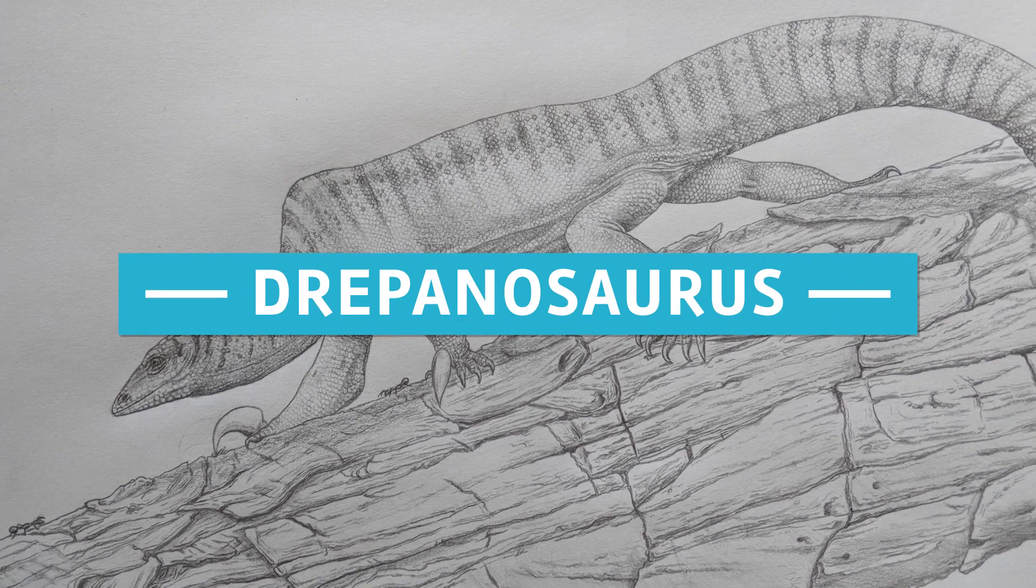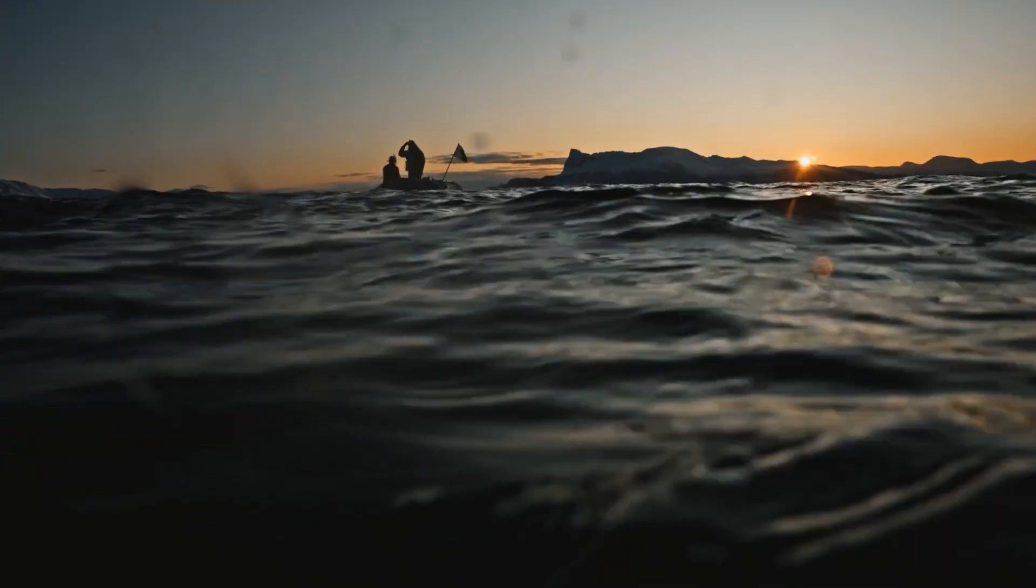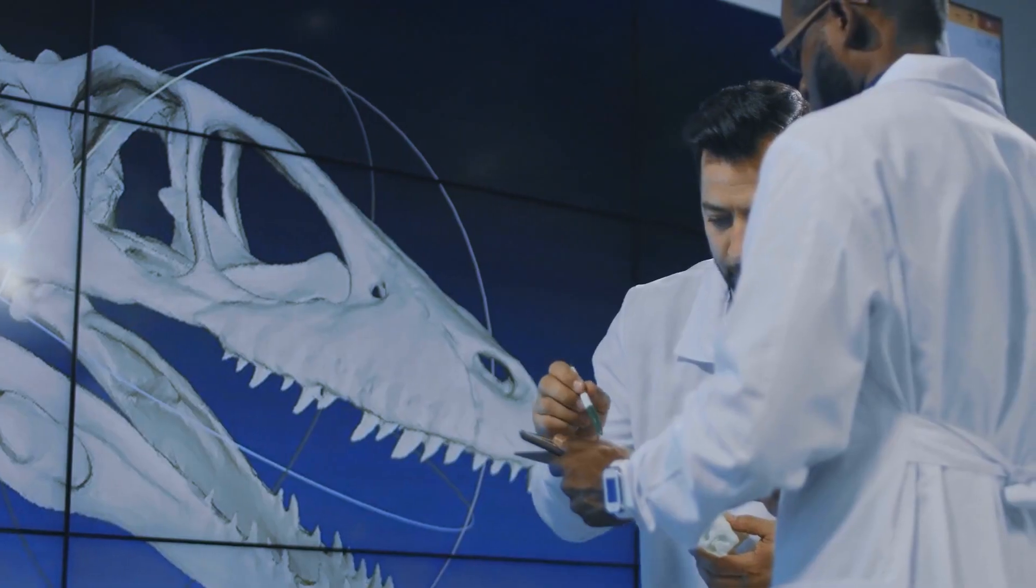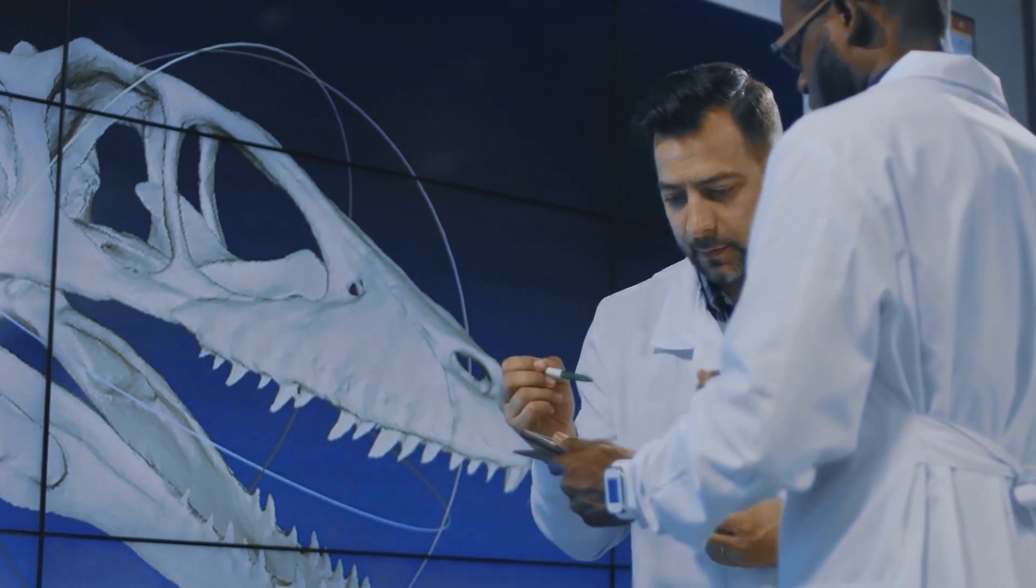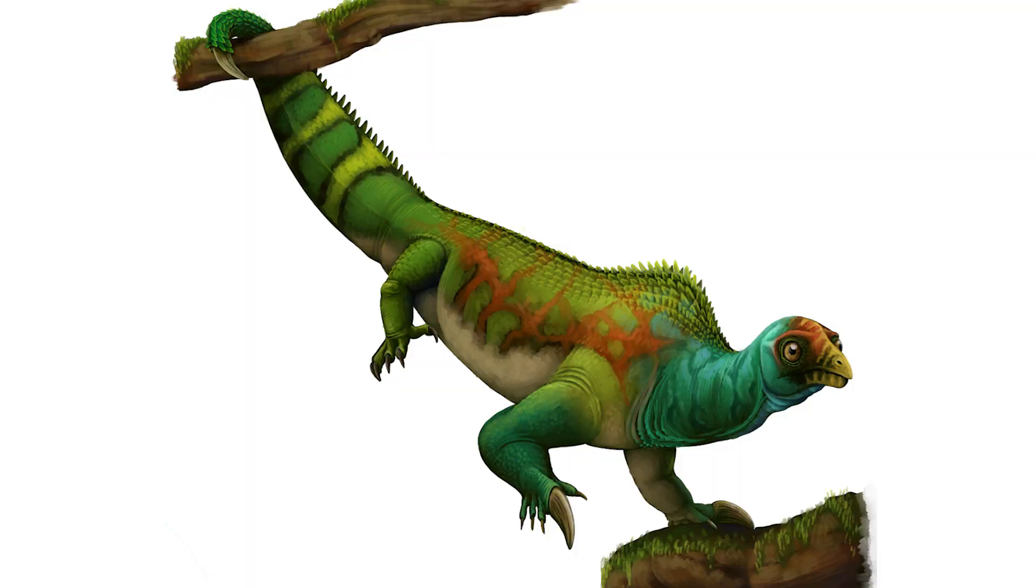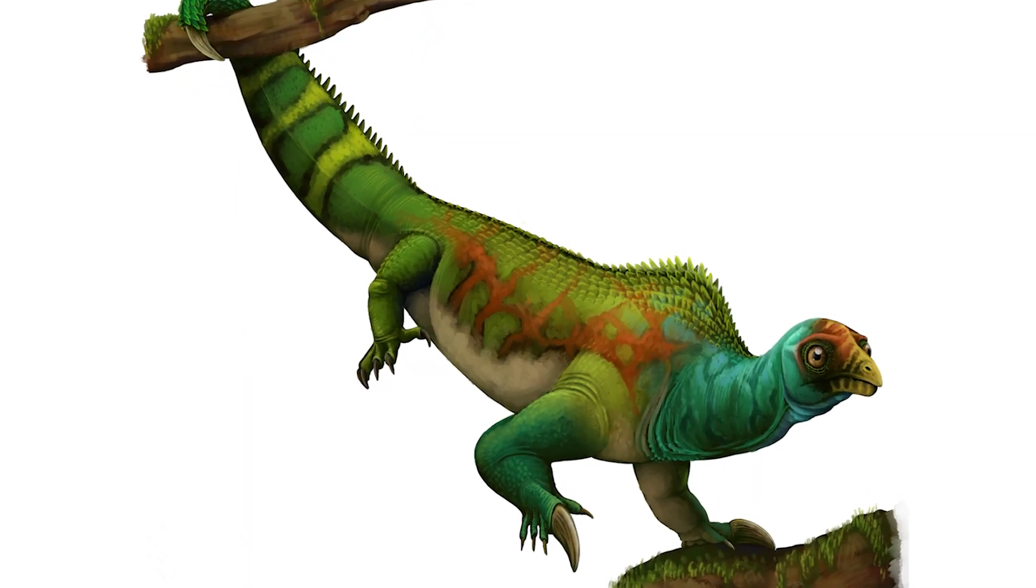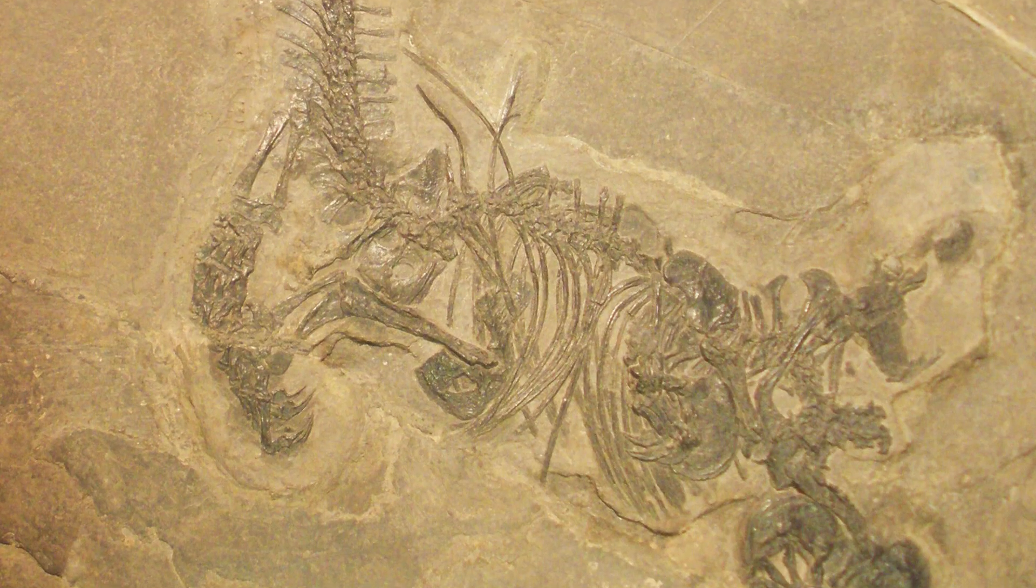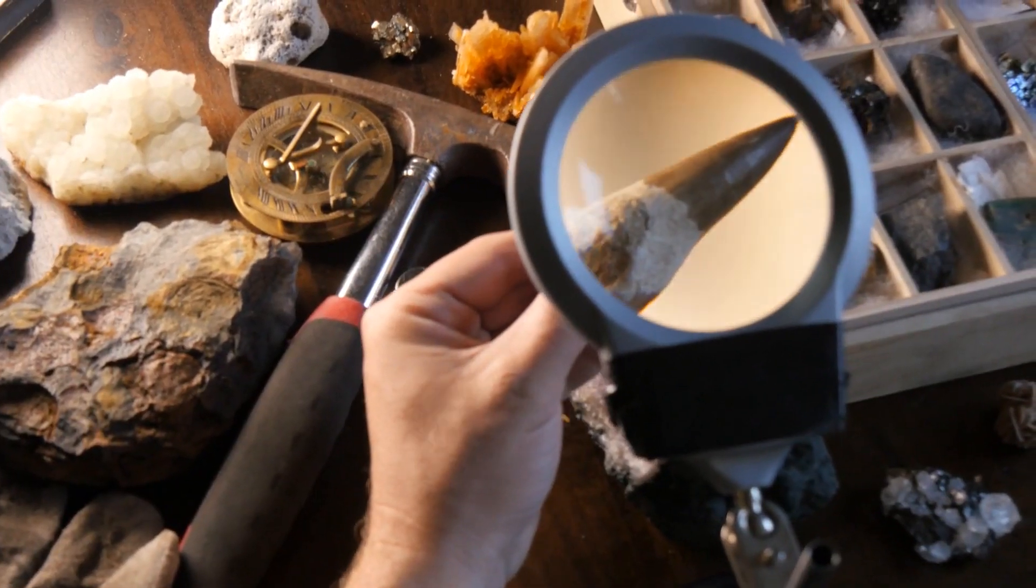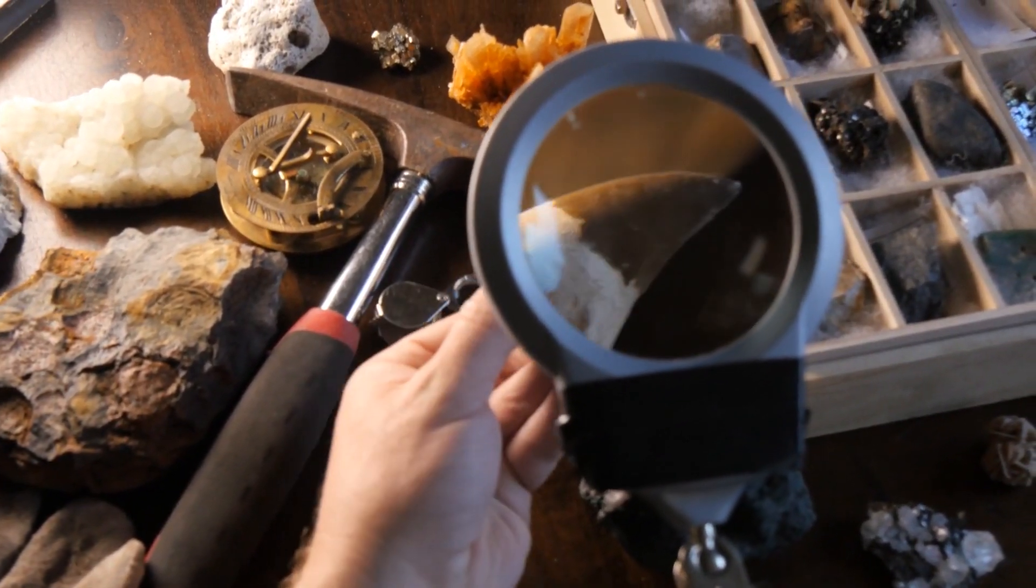Number 6 – Drepanosaurus. Fossil records are the closest thing we have to document history about evolution and creatures that are extinct. Through the research and digging for fossils, a lot of creatures with body composition different from what we imagine as normal have been discovered. The Drepanosaurus is one such creature. Fossils of this extinct creature were first discovered in Italy. The discovery drills a hole in our understanding of how time and matter adds up.